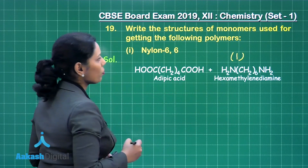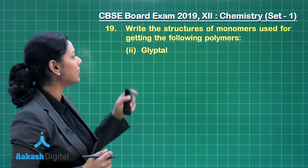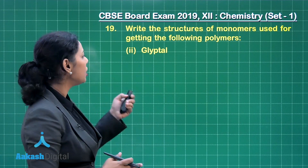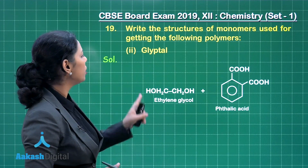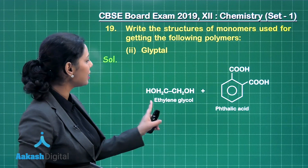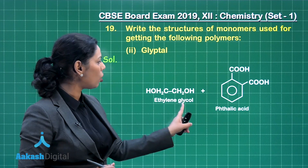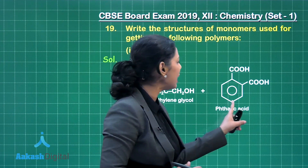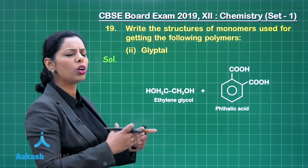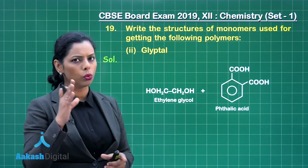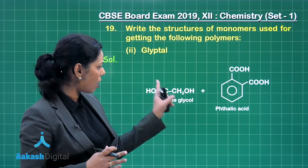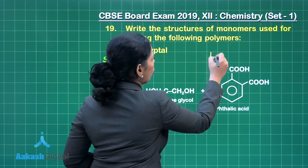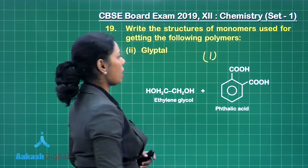The second polymer is Glyptal. In case of Glyptal, we have two monomers: one is ethylene glycol — the formula is given here — as well as phthalic acid. By writing the names of these monomers, you will obtain full one mark: half for each. So one mark is awarded here.